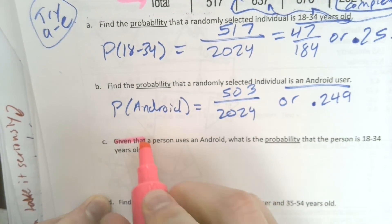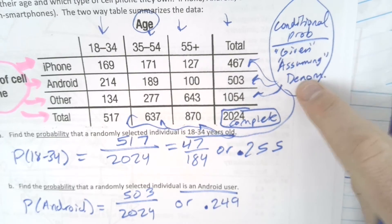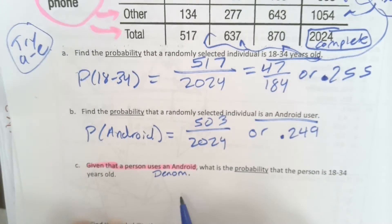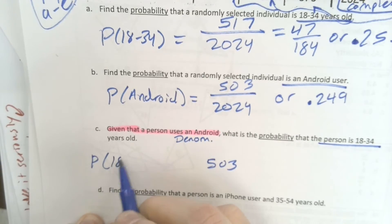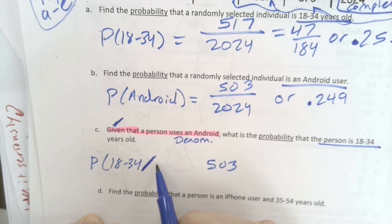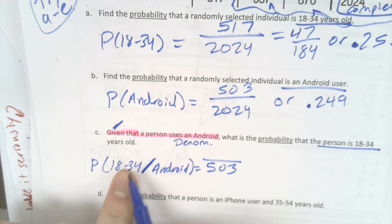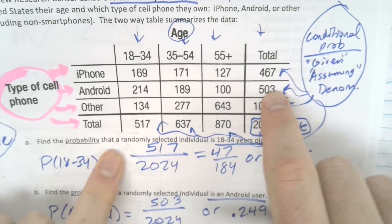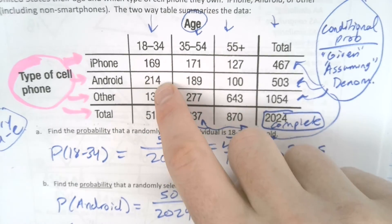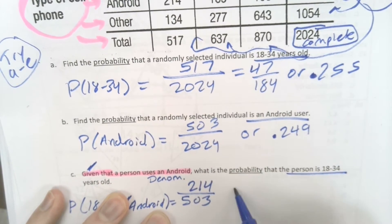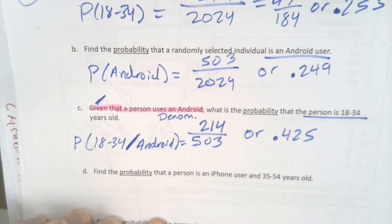Here's where things get a little spicy. Given that a person uses an Android. So now, this is our denominator. Remember? So how many people are using Androids? 503. So we're trying to find the probability that we select someone who is 18 to 34 years old. Given that, that's what that means. You put the slash, given that they're using an Android. So the probability of 18 to 34 year olds, given that they're using an Android 503. So we're only looking for the age of 18 to 34. Boom. 214 out of 503. And that's almost, actually, that's a little over 40 percent. That'd be 0.425.